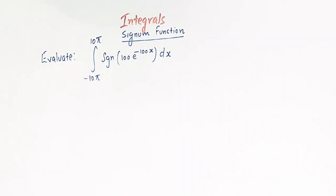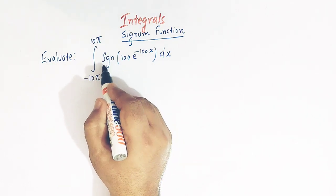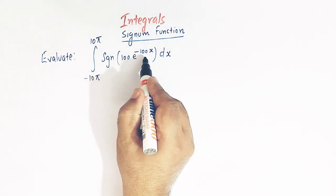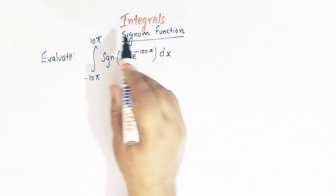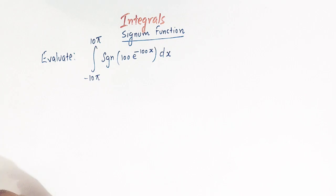Hello viewers. In today's class we are going to discuss an important definite integral related to the signum function. We have to evaluate the integral from minus 10 pi to 10 pi, where the integrand is signum of 100 times e raised to minus 100 x. I will solve this integral by making use of the definition of the signum function. So let us start.